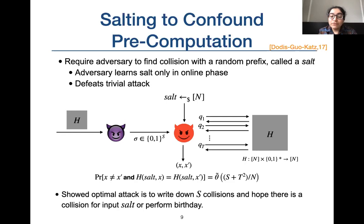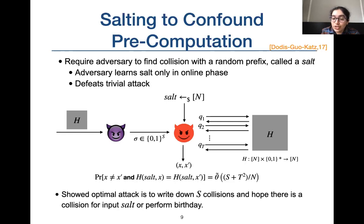The trivial attack is where the adversary stores collisions for order-s salts in the pre-computation phase. Then in the online phase, either the advice contains the collision for the challenge salt, or the adversary succeeds through a birthday attack. This is indeed the optimal attack.